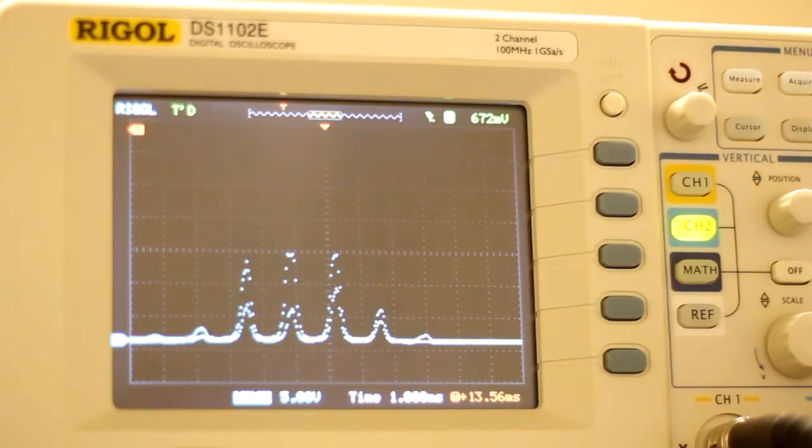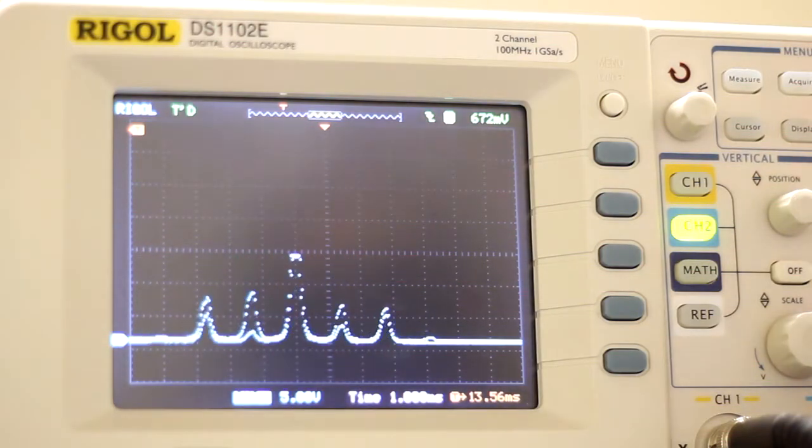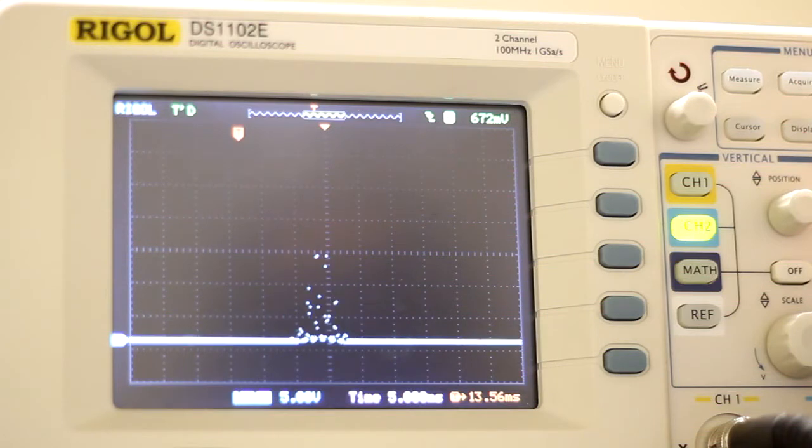And by applying a changing voltage to the mirror's piezoelectric actuators, we can sweep through a range of frequencies and see their interference patterns on the oscilloscope. Those six peaks represent standing modes within the laser cavity, and they move from left to right as the laser warms up.